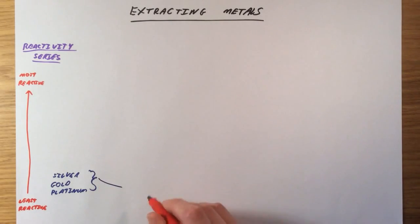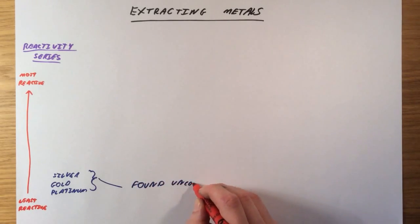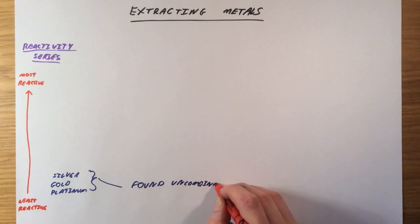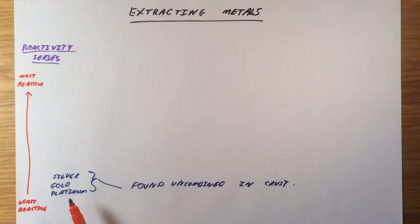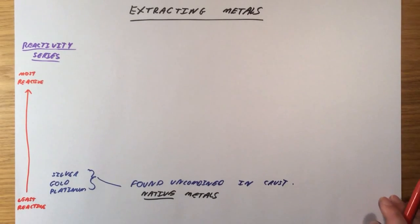The reason is that they are so unreactive that we find them uncombined. So they're found uncombined in the Earth's crust. This means you could literally, if you went down to a river with a panning sieve, if you were really lucky, you could find little pieces of gold. This is what actually led to the American gold rush. People were finding gold nuggets uncombined in the Earth's crust. We call them native metals.